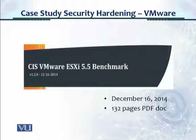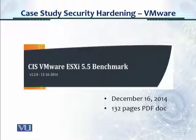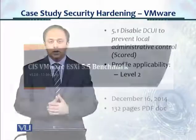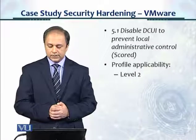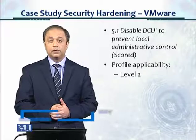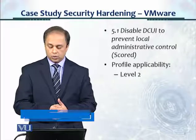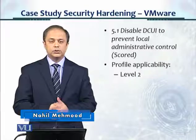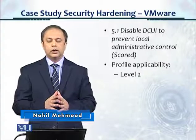This is a look at the top page for the CIS VMware ESXi 5.5 benchmark document from December 16, 2014. So this is also an old document, with 132 pages of PDF. Control 5.1 says disable DC UI to prevent local administrative control, and this is scored and it's a level two, so it's a serious control.